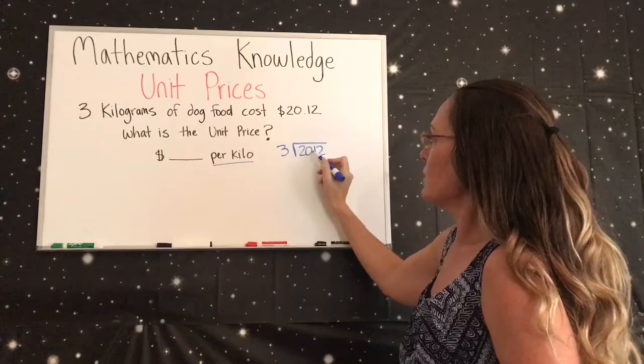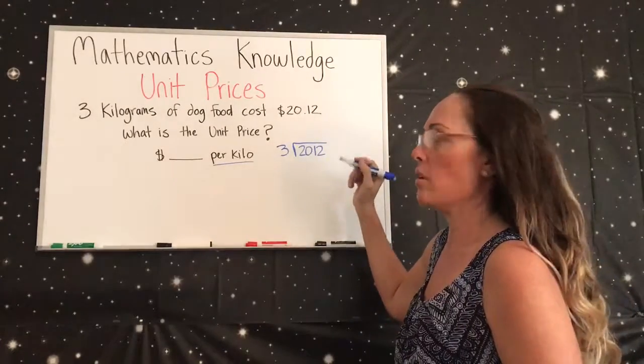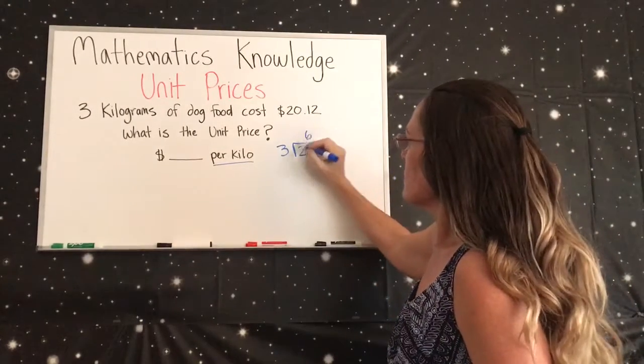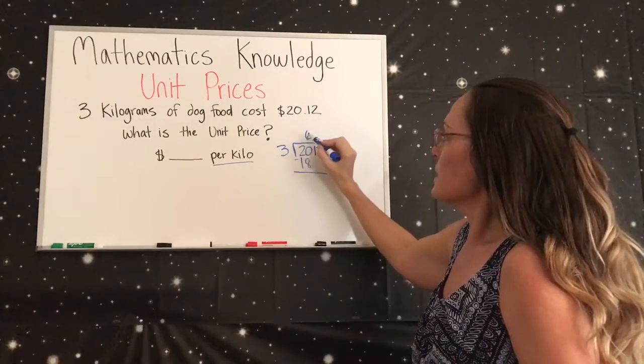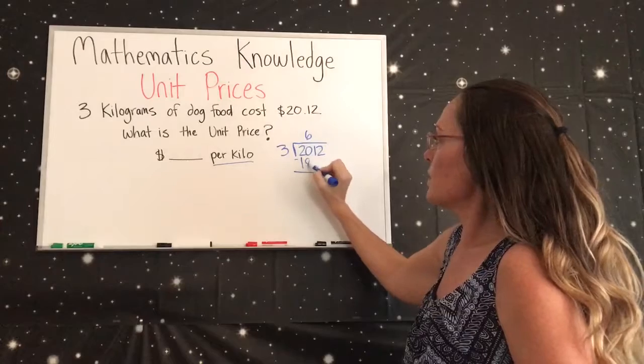3 goes into 20 how many times? 6 times. 6 times 3 is 18. If you don't know how to do long division, I'm multiplying the 6 times the 3 to put it under the 20. 20 minus 18 is 2.